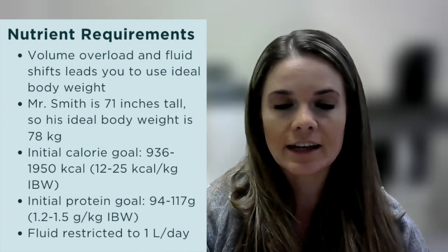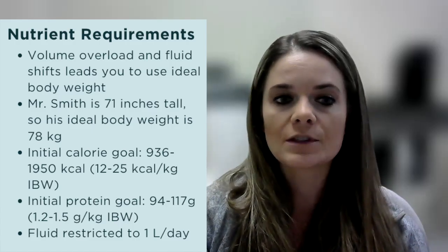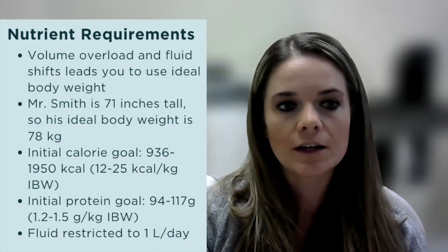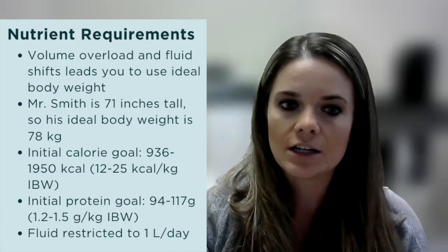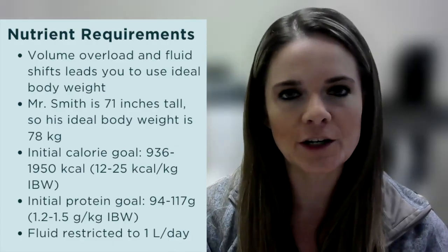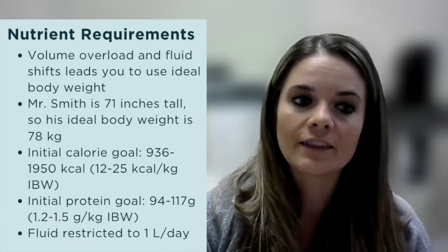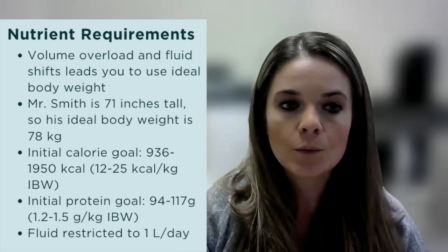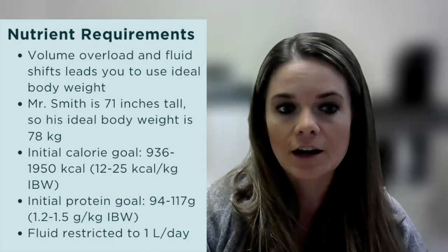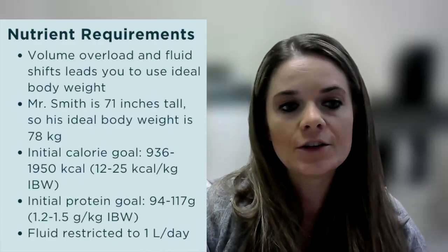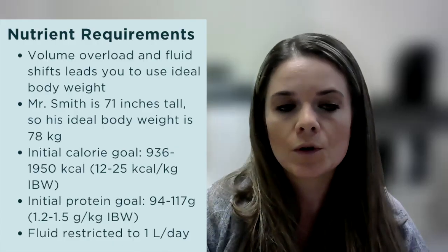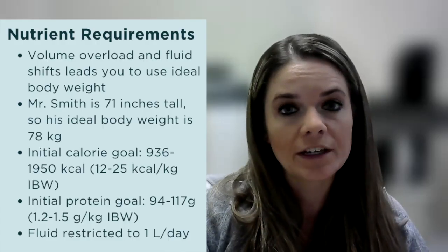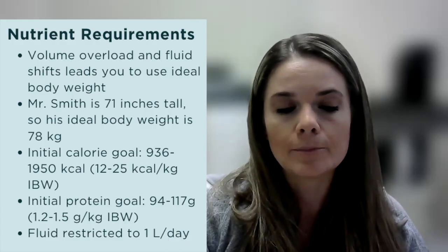Next, calculate Mr. Smith's nutrient requirements. Given his volume overload and fluid shifts on CVVHD, you use his ideal body weight. At a height of 71 inches, his ideal body weight is 78 kg. His caloric needs are 936 to 1,950 calories (12–25 kcal/kg), which is the standard recommendation for critically ill patients in the first one to seven days. Protein needs are 94 to 117 grams (1.2–1.5 g/kg IBW). The medical team restricts fluids to one liter per day given his volume overload and dialysis.